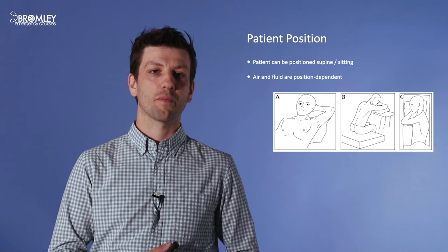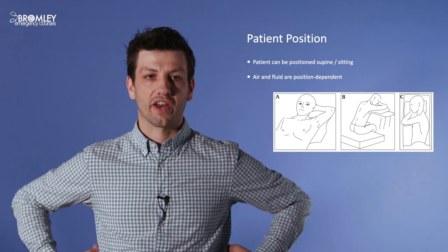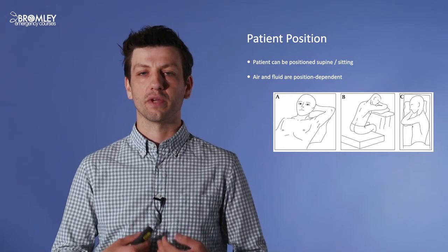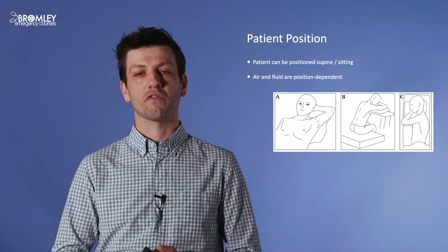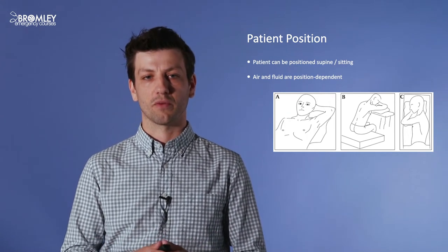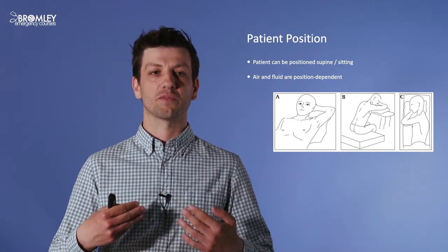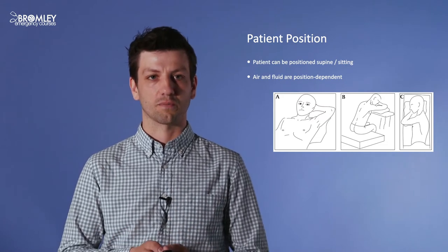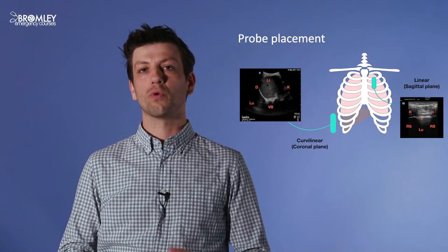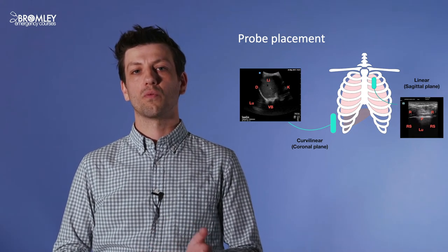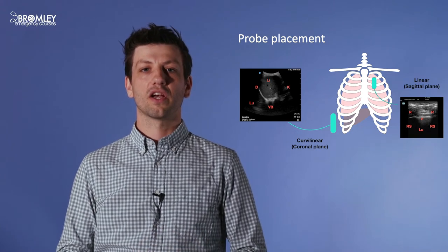We need to think about how we position our patients. We want to scan at the front and at the back, so this could be lying supine or sitting forwards for the posterior zones. Remember that air and fluid are position dependent — air rises to the top of the chest, fluid sinks to the bottom. If the patient is supine, air will be at the highest point, around the fifth to sixth intercostal spaces; if upright, air rises to the first to second intercostal spaces. The probe mark will be oriented to the head in a longitudinal section.